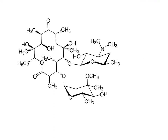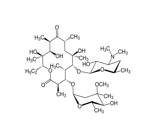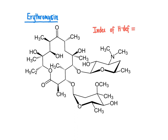To highlight this, let's look at the structure of erythromycin, an antibiotic molecule originally isolated from a bacteria. The erythromycin molecule has a pretty elaborate molecular formula, and I would not want to count out all the carbons, hydrogens, oxygens, and nitrogens to calculate the index of hydrogen deficiency that way. Instead, all you need to do is count the number of rings and the number of pi bonds directly from the structure.